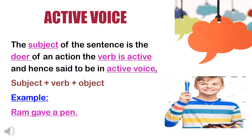Active voice: when the subject of the sentence is the doer of an action, the verb is active and hence it is in active voice. The general formula in active voice is subject plus verb plus object. For example, 'Ram gave a pen.' Here, the subject is Ram, who does the action.